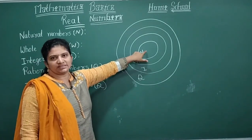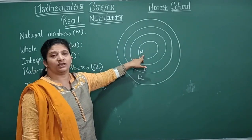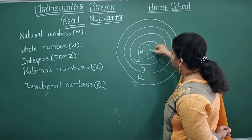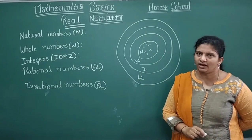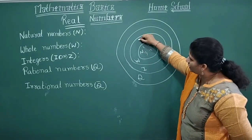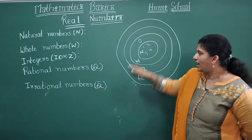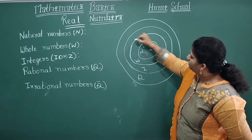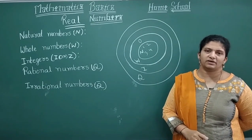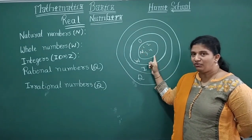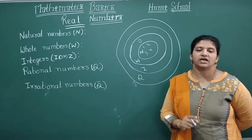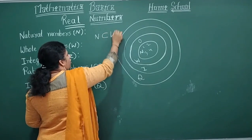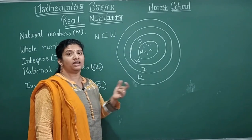Look at the concentric circle diagram. The inside circle is N — natural numbers: {1, 2, 3, 4, ...}. In the next ring I write only 0, so this complete ring represents whole numbers — counting numbers with zero. Natural numbers are subsets of whole numbers.